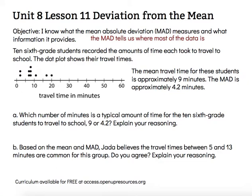The MAD is where most of the data is — where the data is located around that center. We know that the mean is the center, or the typical value or balance point for the data. So we can use that to say, in general or overall, most of the students, many of the students — we can use those kinds of words associated with the mean.